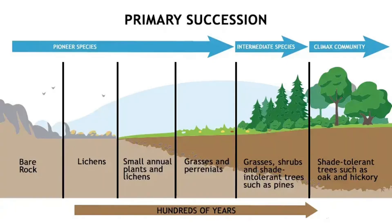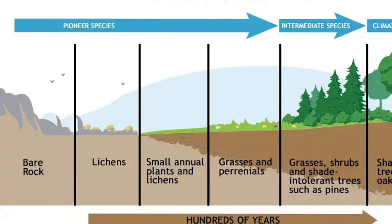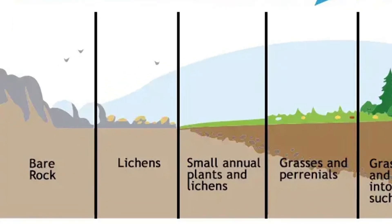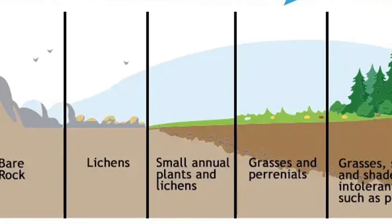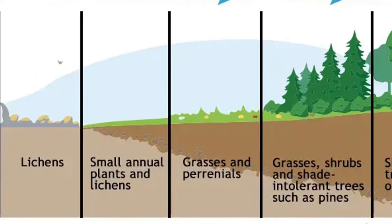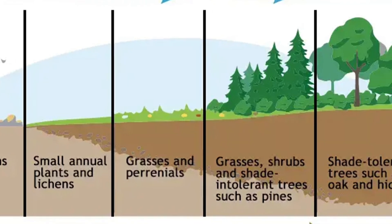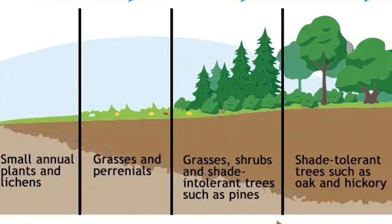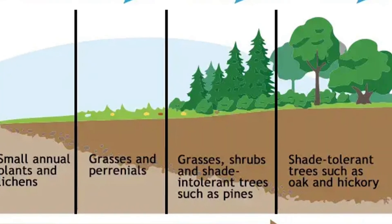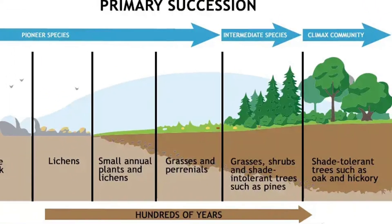In primary succession, a system begins with no soil but rather exposed bedrock. This could occur from a glacial retreat or a volcanic eruption that lays down new bedrock. The first thing that needs to occur is the creation of soil, so we begin with lichens and mosses that start the process of weathering the rocks down to usable soil. Grasses come in next, followed by shrubs, which then normally sees a lot of animals starting to come in, bringing additional nutrients as they die and decompose. Trees eventually come in — the fast-growing, less competitive kinds first — eventually to be replaced by competitive long-lived tree species like sugar maples, beeches, and oaks.